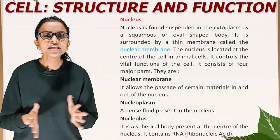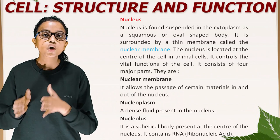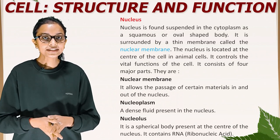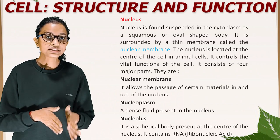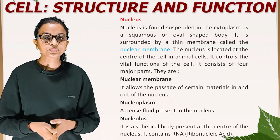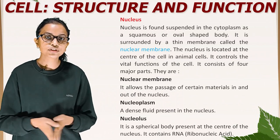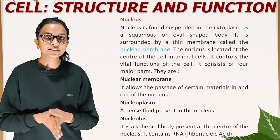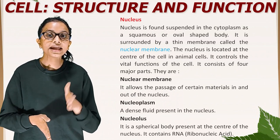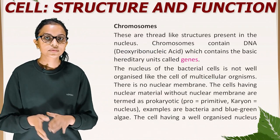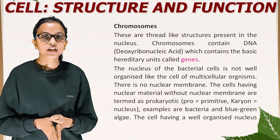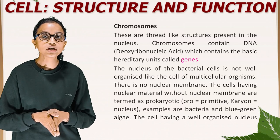Nucleus. The nucleus is found suspended in the cytoplasm as a squamous or oval-shaped body. It is surrounded by a thin membrane called the nuclear membrane. The nucleus is located at the center of the cell in animal cells and controls the vital functions of the cell. It consists of four major parts: the nuclear membrane, which allows the passage of certain materials in and out of the nucleus; nucleoplasm, a dense fluid present in the nucleus; nucleolus, a spherical body at the center of the nucleus containing RNA (ribonucleic acid); and chromosomes, thread-like structures present in the nucleus that contain DNA (deoxyribonucleic acid), which carries the basic hereditary units called genes.